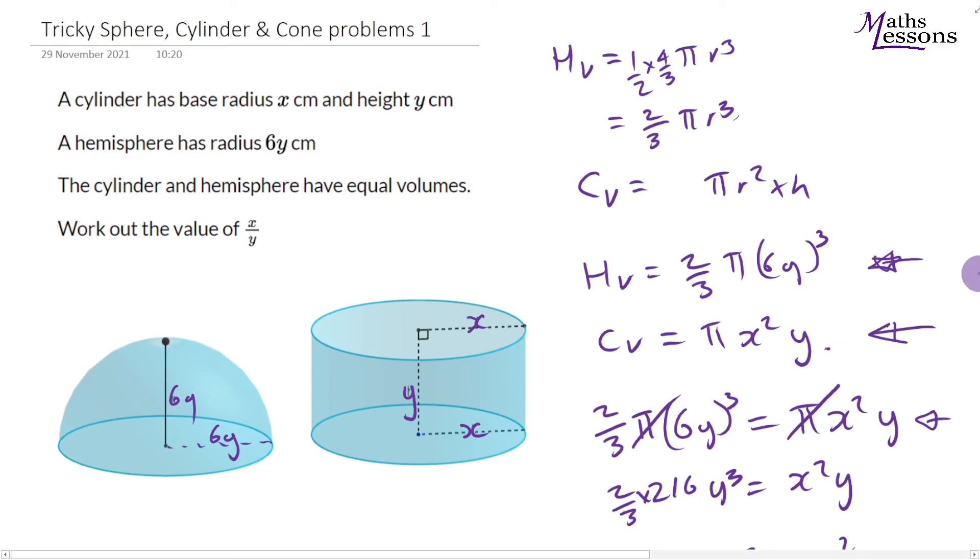So remember, think about the instructions. You're given this information, write it down. Given this information, write it down. You're given this information, they're equal, make them equal. Then try and see if you can work out how to get to there. That's the tricky part. I hope that was helpful.